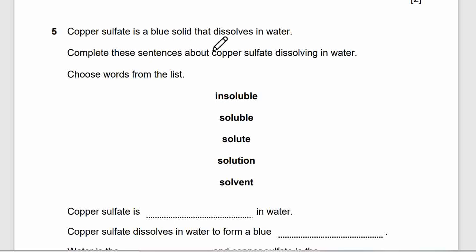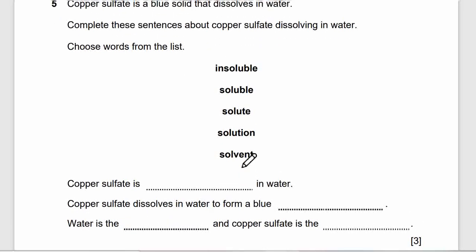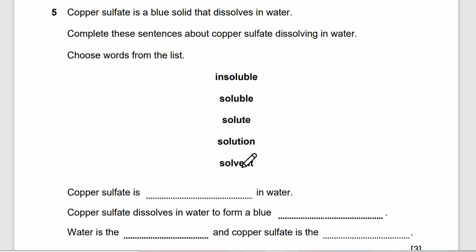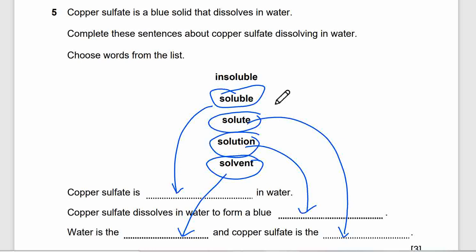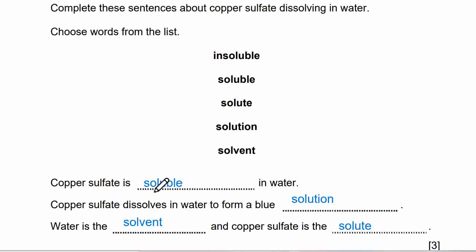Number 5: copper sulfate is a blue solid that dissolves in water. Complete these sentences about copper sulfate dissolving in water using words from the list: insoluble, soluble, solute, solution, solvent. Copper sulfate is soluble in water. The solid dissolves in water to form a blue solution. Water is the solvent because water dissolves copper sulfate, and copper sulfate is the solute — the substance dissolved in the solvent.